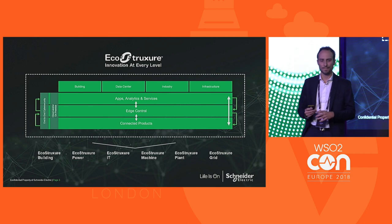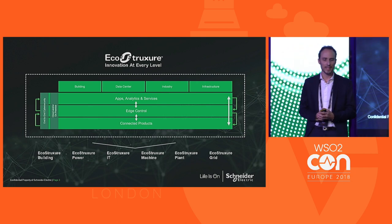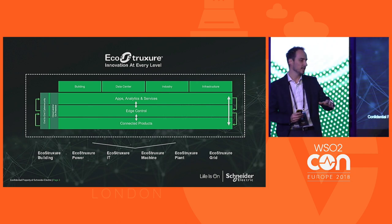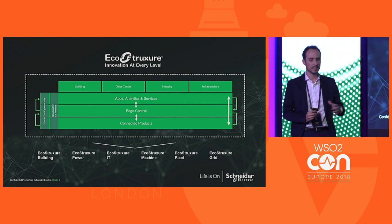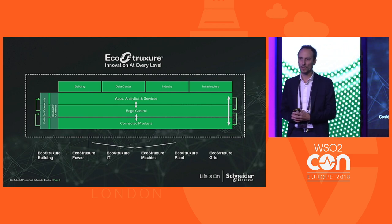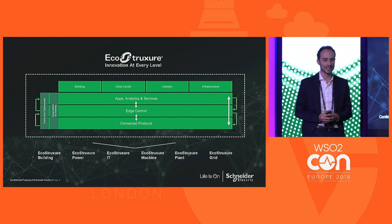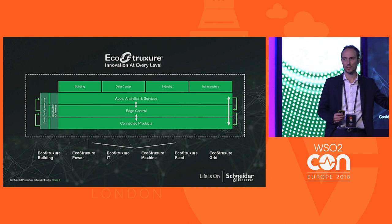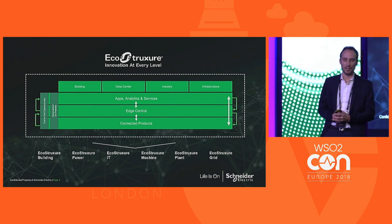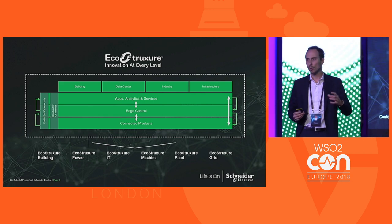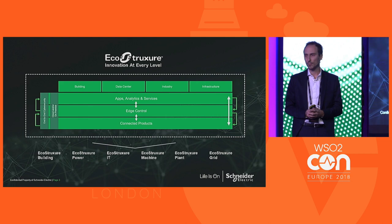We are developing partnerships and collaborating with partners and developers on six domains of expertise: building, power, IT, machine, plant, and grid. EcoStruxure is composed of three layers — which can be both on-cloud or on-premise — apps, analytics and services; edge control; and connected products. Connected products can be all sorts of things like circuit breakers, relays, sensors, and UPSs, all with embedded intelligence to make their operation better and more efficient.